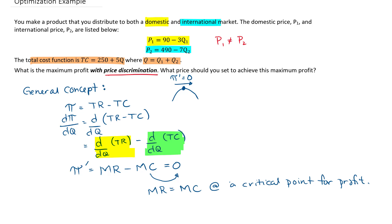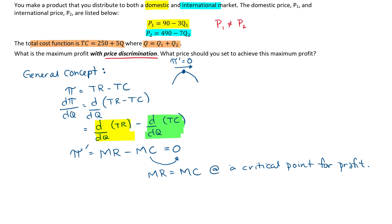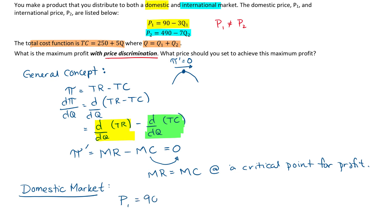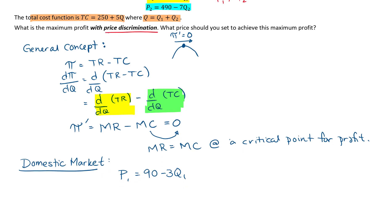Our marginal revenue and marginal cost are the same at those critical points, and we're going to use this concept to help solve this problem. Let's look at each market independently, starting with the domestic market. For our domestic market we have the price P1 equal to 90 minus 3Q1. We also have a general cost equation: TC equals 250 plus 5Q. Note that Q is not the same as Q1.